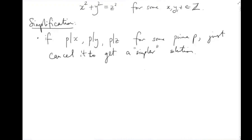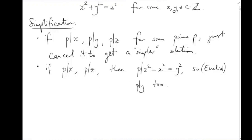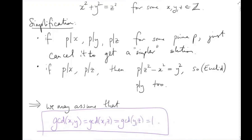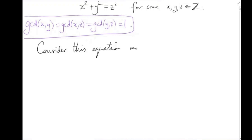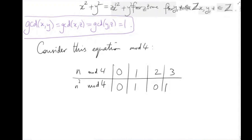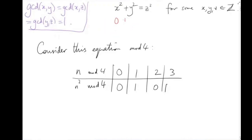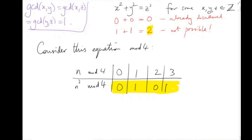Let's start by simplifying. If they share a prime factor, we can cancel it and get a simpler solution, so assume they don't. Notice that if any two of x, y, z are divisible by some prime p, then the third is as well — by Euclid's lemma. So the pairwise greatest common divisors of x, y, and z are all 1. Looking at this equation mod 4: the only squares mod 4 are 0 and 1. They can't both be 0 mod 4 (we'd cancel a factor of 2), and they can't both be 1 mod 4 (that would make z² equal to 2 mod 4, which is impossible). So one of x and y is odd — say x — and one is even — say y — and z is odd.